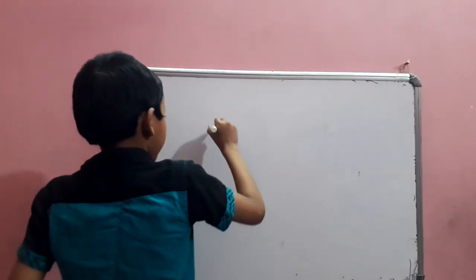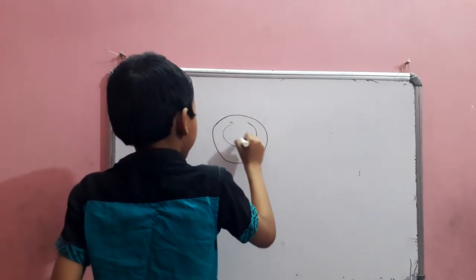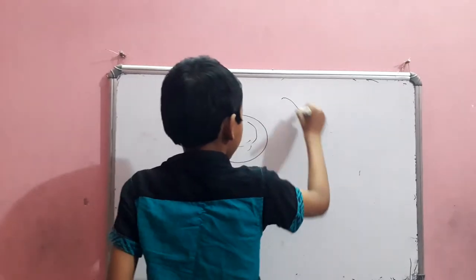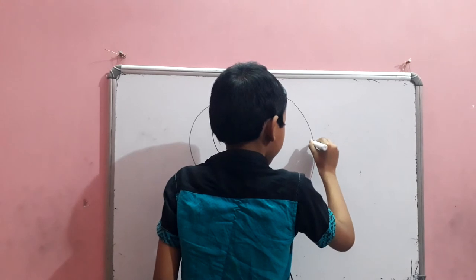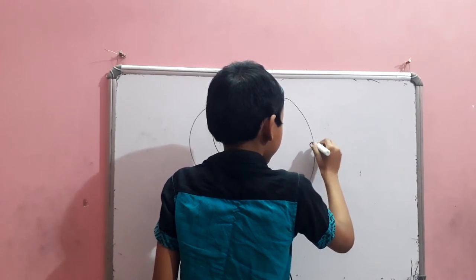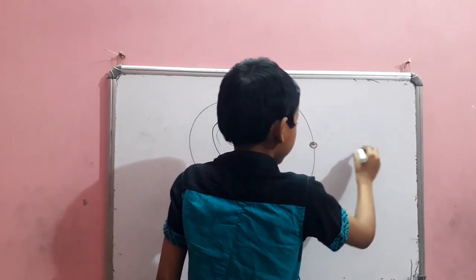So here it is. This is Corot-8, the star, and this is the orbit of Corot-8 B, which is a new Neptune.